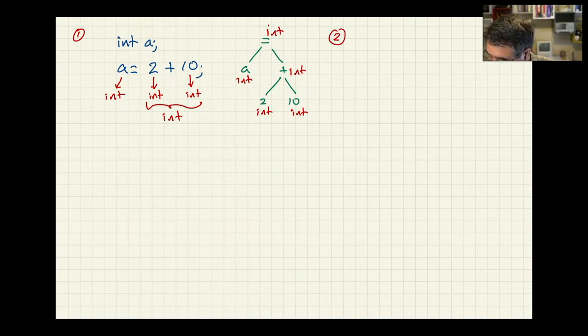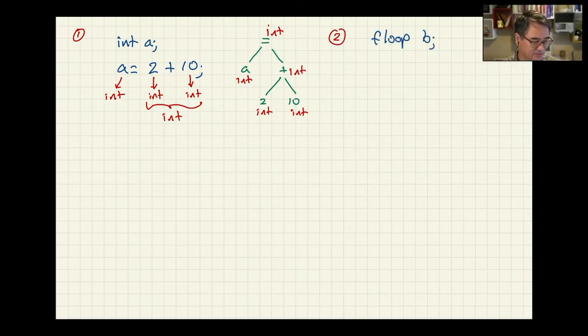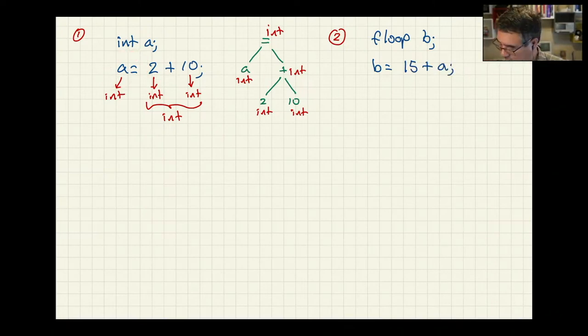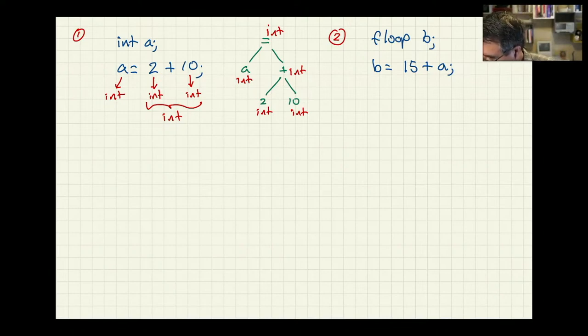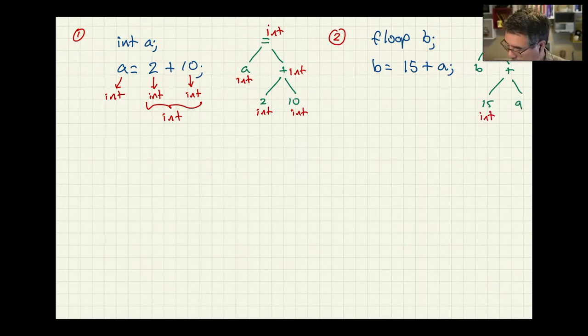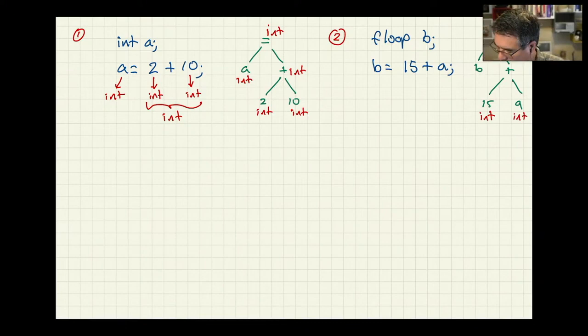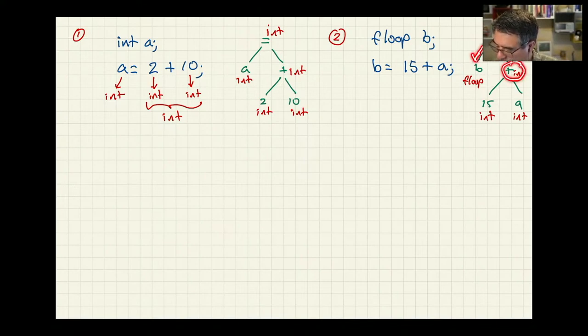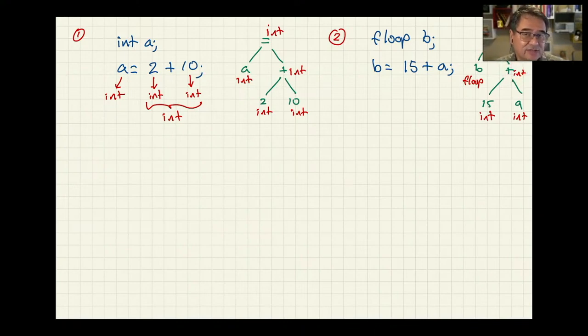Let's look at another example. Let's say we have floop b, a variable called b, whose type is floop. And we go b is equal to 15 plus a, where a is the one from the first problem. So what happens here? Well, we still build up that tree. We've got the equals, and then a b, and a plus, and a 15, and a. And we know that 15 is an int, because that's what integers look like. We know that a is an int, because that's how it was declared. And we know that b is a floop. So when we start combining the nodes of this tree, we do int and int. When added together, make an int. And now we've got a problem. We're trying to take an integer and assign it to a variable that's a floop. And that generates what's called a type mismatch.